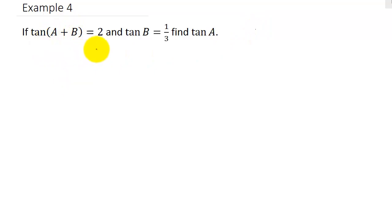So let's go ahead and the first thing we want to do is let's just go ahead and write down the formula. So I have tangent A plus B is equal to tangent A plus tangent B over 1 minus tangent A tangent B.